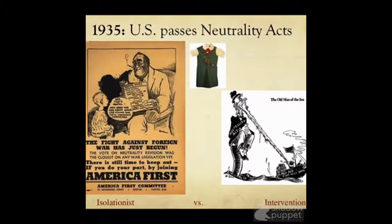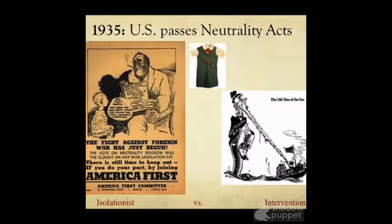In 1935, the US passed Neutrality Acts. The United States responded to growing aggression from Germany — who was rearming and completely ignoring the Treaty of Versailles — Japan's invasion of China, and Italy, by passing the Neutrality Act of 1935. The act made it illegal to sell to any nation at war or in a civil war. In part, this is because many Americans believed in isolationism, or staying out of European affairs. Some groups like America First felt the US needed to worry about issues inside the United States, like the Depression and economic problems. Others worried that trade with warring nations would drag the United States into war, as it had in World War I.